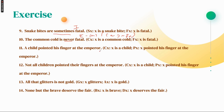'A child pointed his finger at the empire' — it cannot mean all children, so it means some child — I proposition. 'Not all children pointed their finger at the empire,' meaning some children did not point — that changes it to O proposition. 'All that glitters is not gold' — here 'all' and 'not' appear together, meaning it is O proposition.